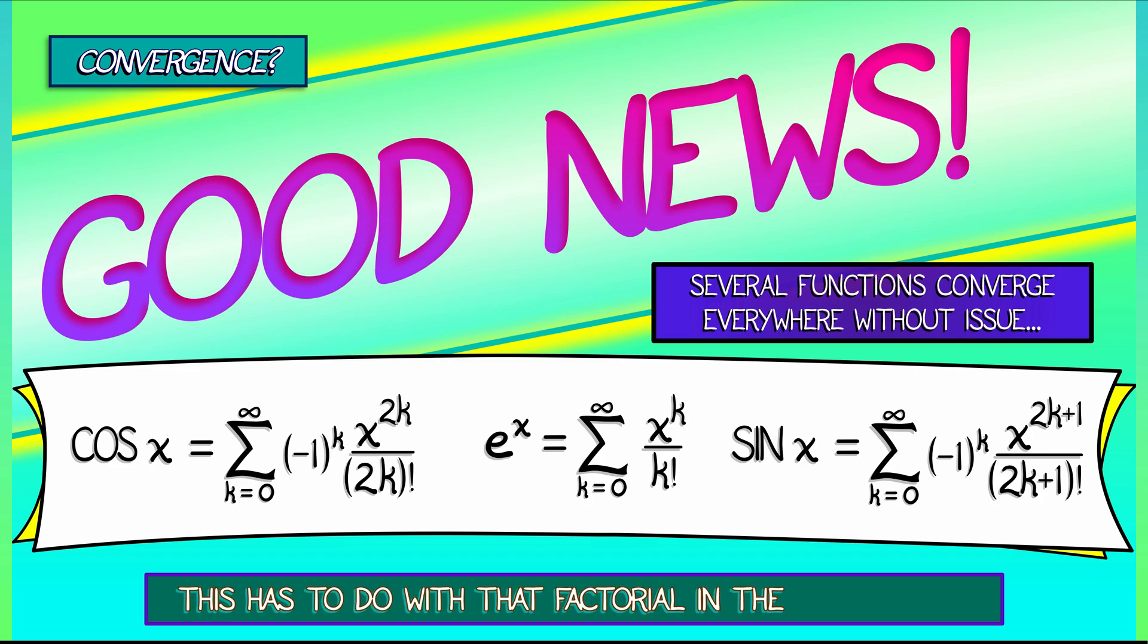Well, this has to do with that factorial in the denominator. No matter what value you put in for x, even though you're taking it to higher and higher powers, that factorial downstairs gets so big so quickly that adding up an infinite number of these things converges nicely.